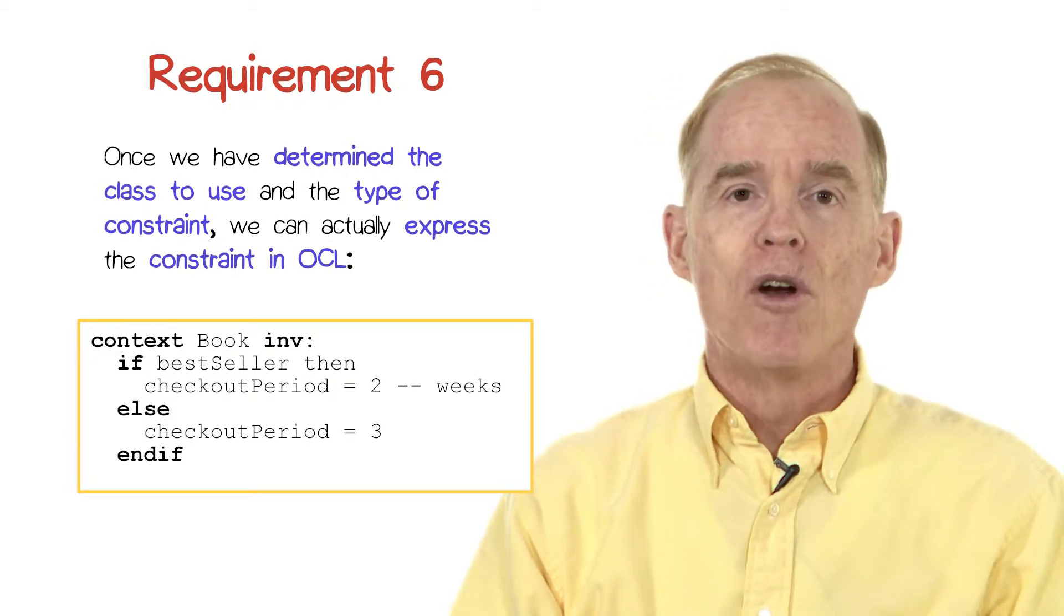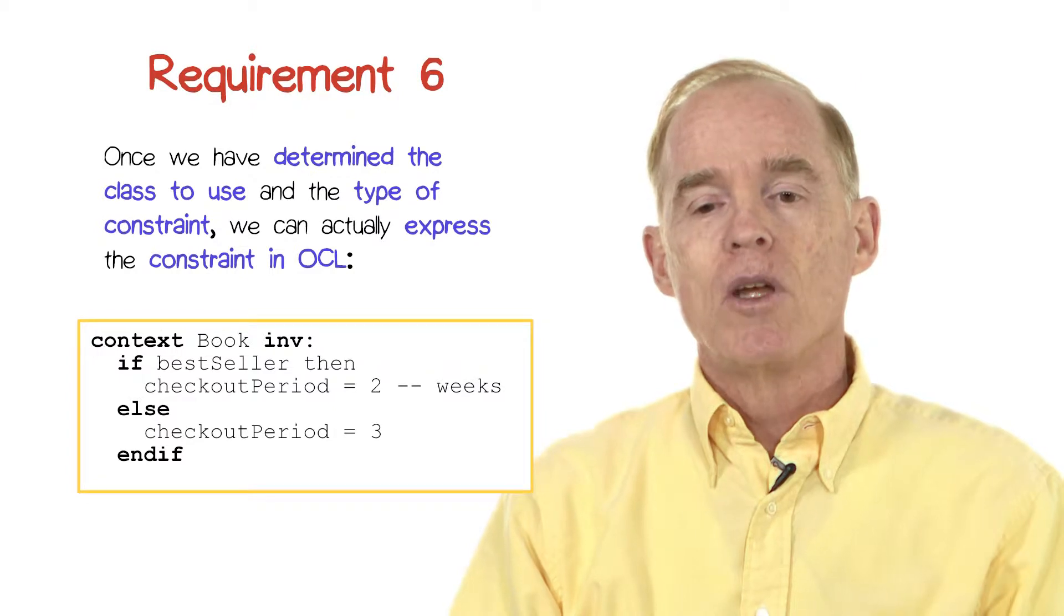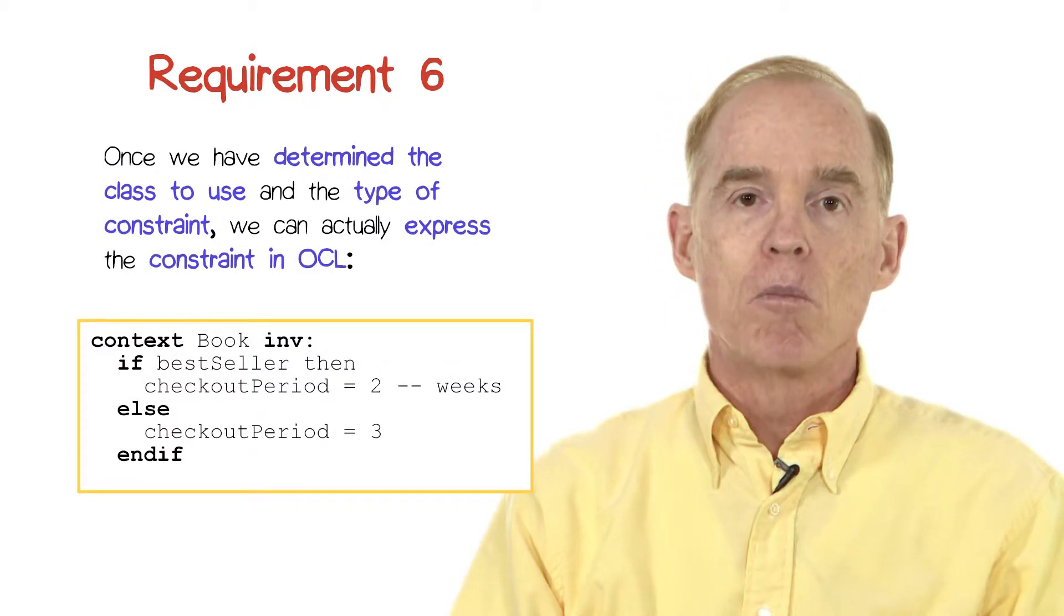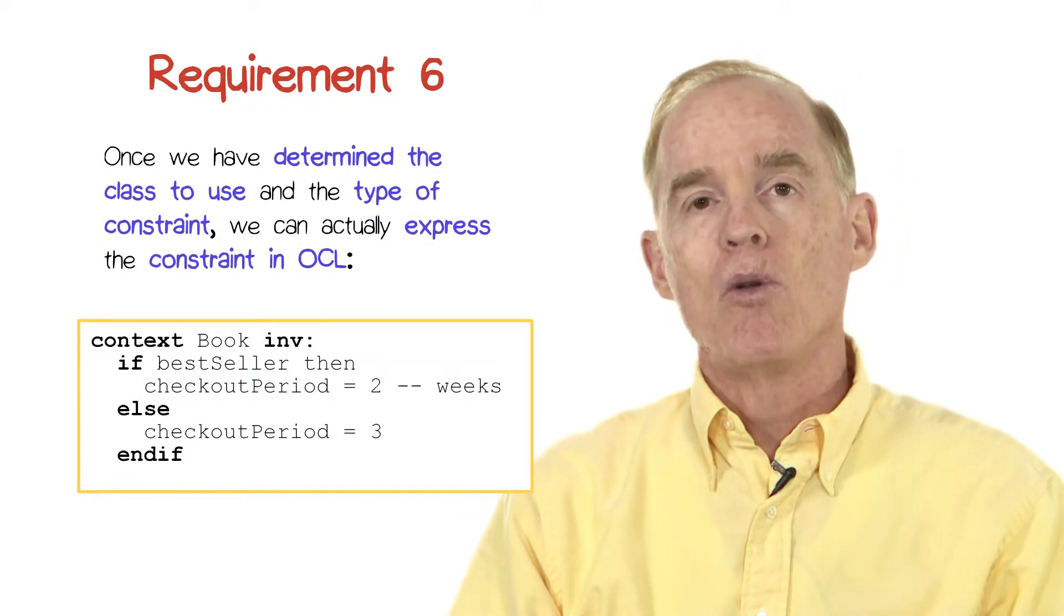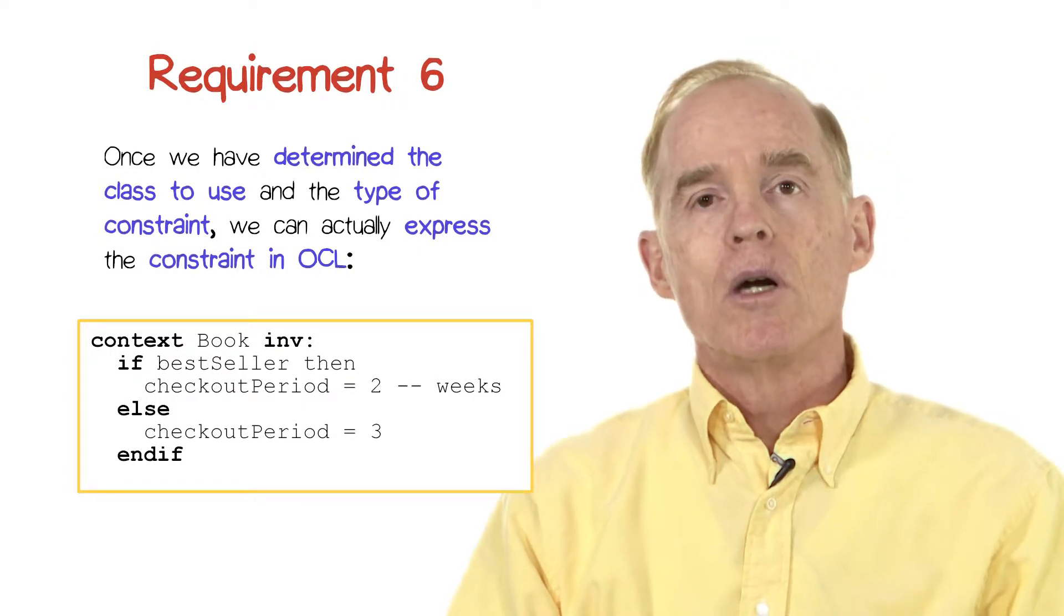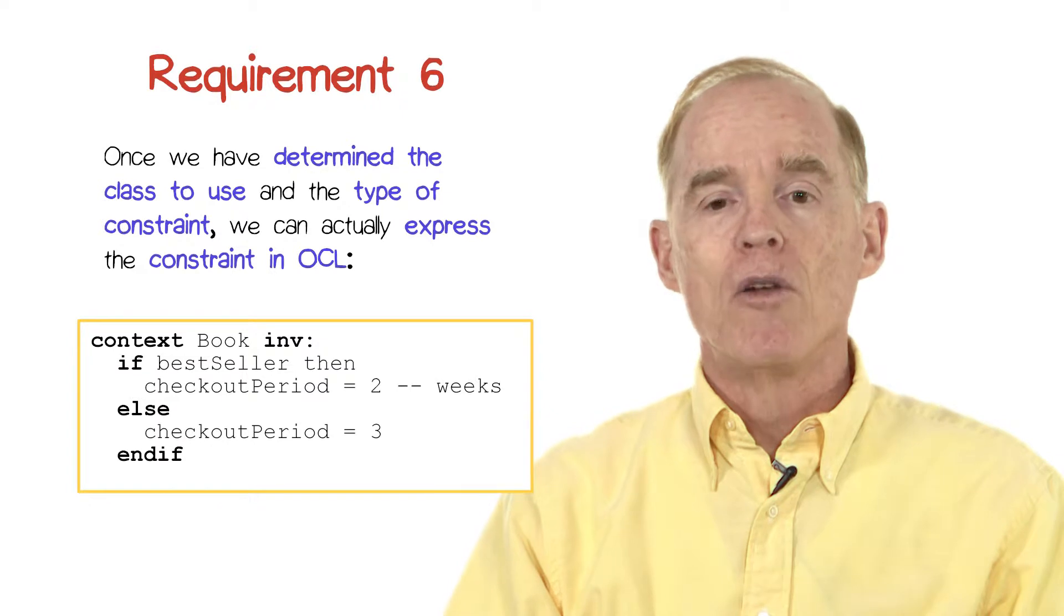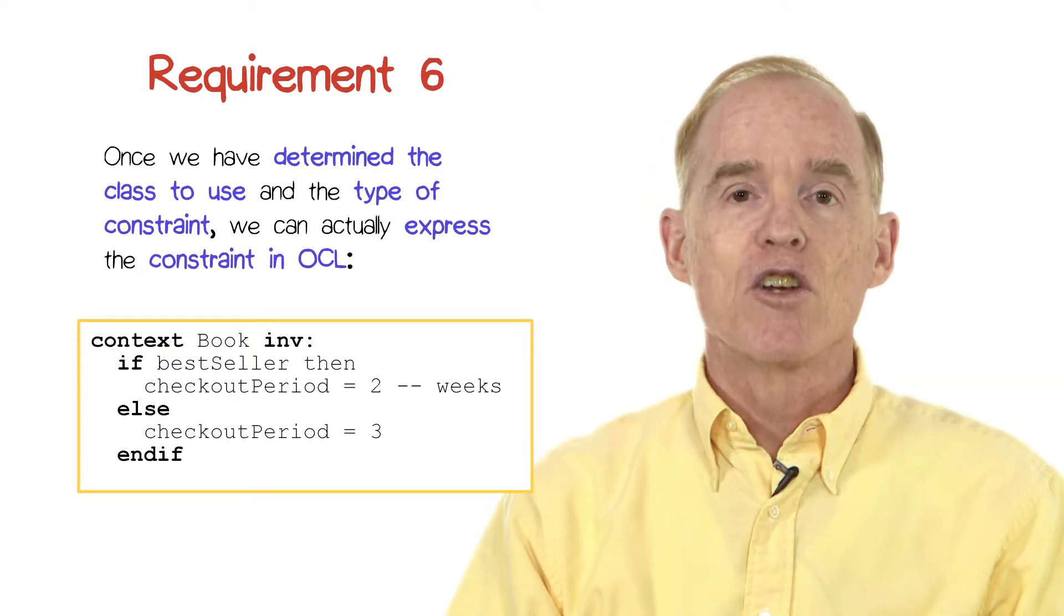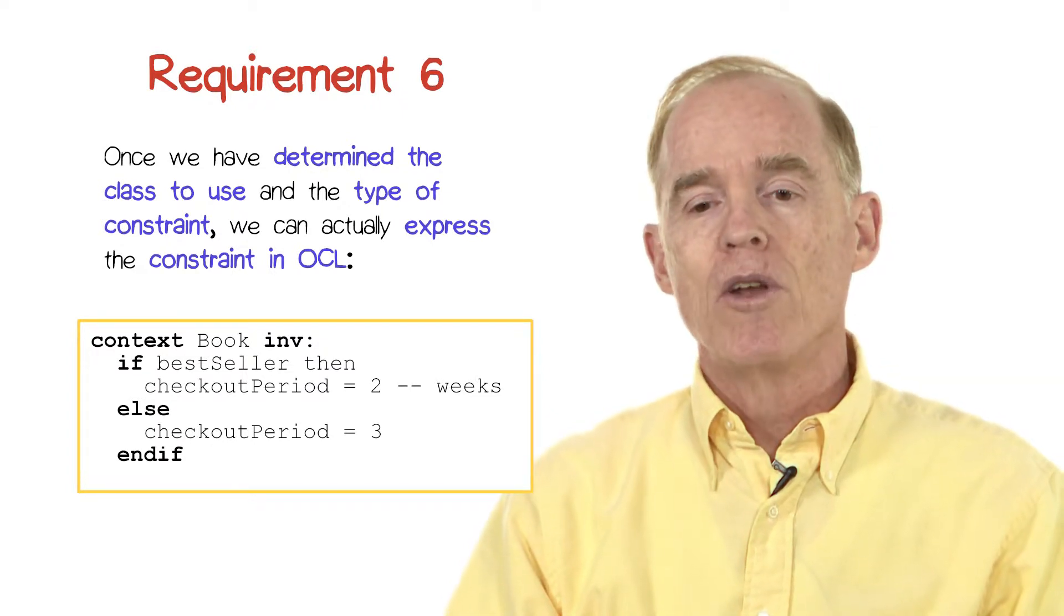What I put in bold are keywords that belong to the language. And the parts in plain text, not bolded text, correspond to the particulars of the UML diagram. So we have the context is book. We have the keyword invariant.